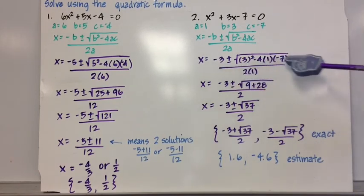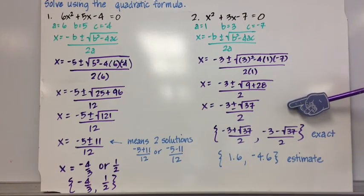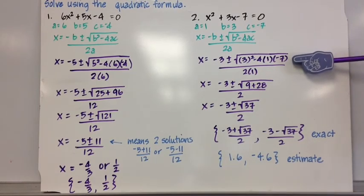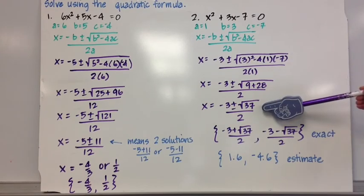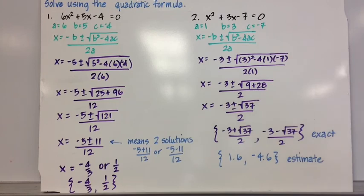I substitute a, b, and c into the quadratic formula one by one, making sure I get all those values correctly. Then I just begin to simplify. The discriminant is 9 plus 28, or 37. Negative b is minus 3, 2a is 2. So I end up with negative 3 plus or minus the square root of 37 all over 2.